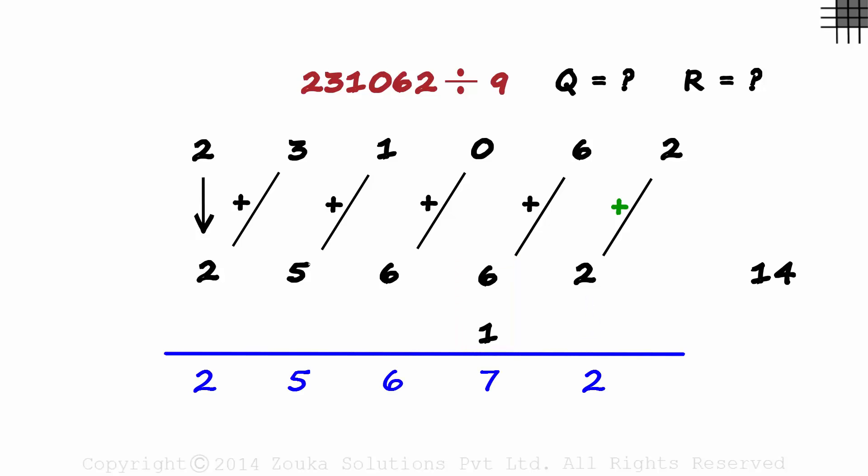Now my question to you is, is 25,672 the quotient and is 14 the remainder? If you use your calculator and multiply 25,672 with 9 and add 14 to the product, you will get 231,062 which is our dividend. But this is incorrect. Why is it incorrect?